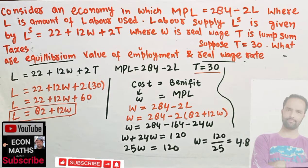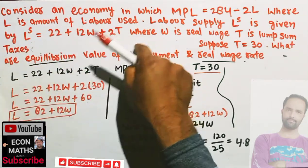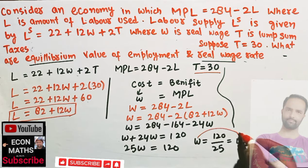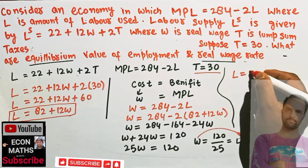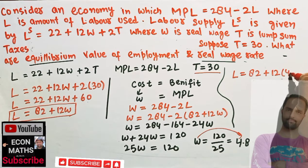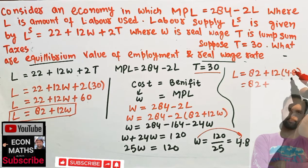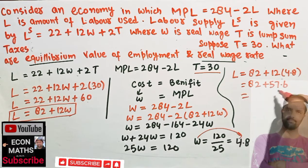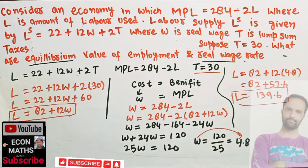Now for equilibrium employment, we plug W equals 4.8 into our labor supply function. Employment equals 82 plus 12 times 4.8, which is 82 plus 57.6, giving us 139.6. So the equilibrium number of laborers employed is 139.6 and the equilibrium real wage rate is 4.8.